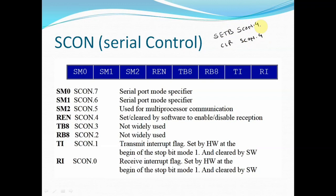The next bit is TB8, which stands for Transfer Bit 8. It is used for serial modes 2 and 3, which are specifically for multiprocessor communication, so we will not use it here and will set it to 0. The next bit is RB8, which stands for Receive Bit 8. This is also related to multiprocessor communication only, so we will also make it equal to 0.